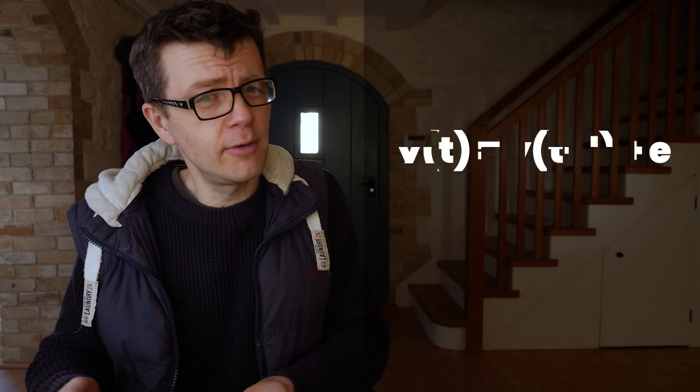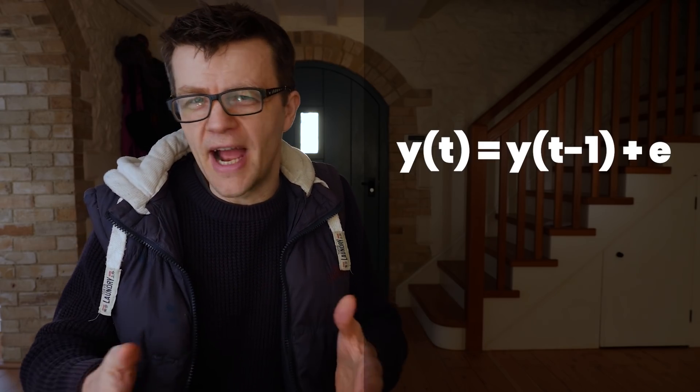This equation might help. What it says is that the value of y at some time t is equal to the value of y at t minus 1, plus a random number — that's what the E stands for. And that's how you plot a random walk. You're going to need to know matplotlib, and using that equation, matplotlib, and some problem-solving skills, you should be able to plot a random walk in one dimension. When you've done that, see if you can plot it in two dimensions, or plot 100 random walks on the same axis just to see how they vary.